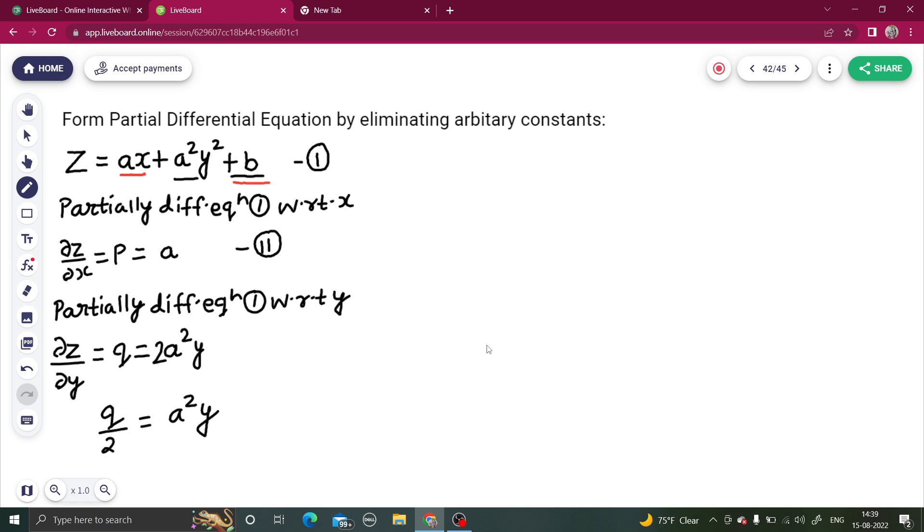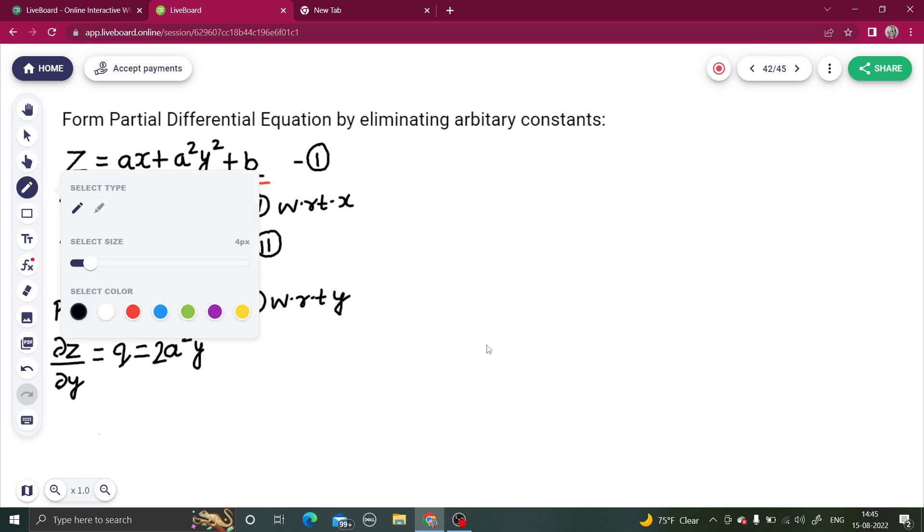And how to eliminate b? That is the problem here. Because a we can eliminate, but again if you put this value of a square y as q by 2, then also constant b is left over. So we are not able to eliminate all the arbitrary constant. You can do one more thing. We can do something with equation number 2 and 3.